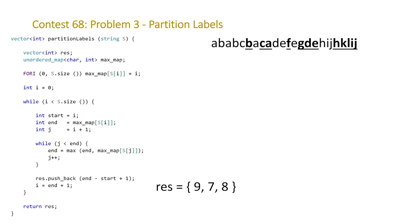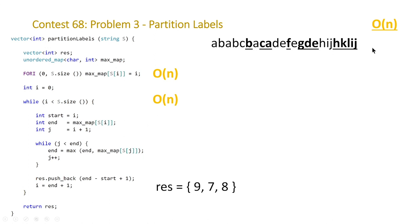The last thing to look at is the complexity. Construction of the hash map is done in linear time. The outer while loop is also linear. You might think this is O(n²) because there are two nested loops, but the key thing to note is that j is used to skip i ahead, so altogether it is actually linear. This isn't a nested loop in the classical sense. The final runtime of this problem is linear.